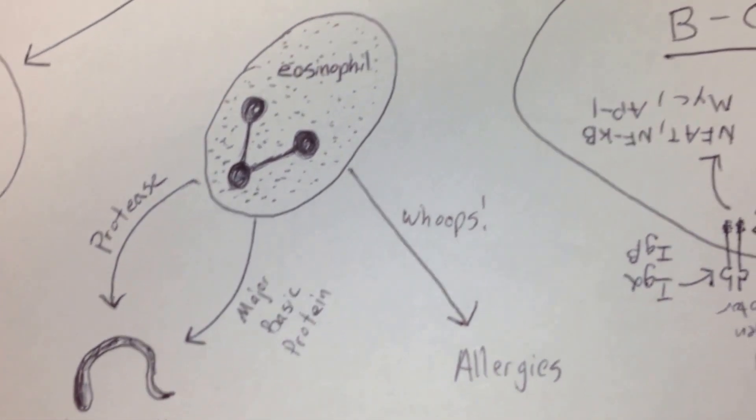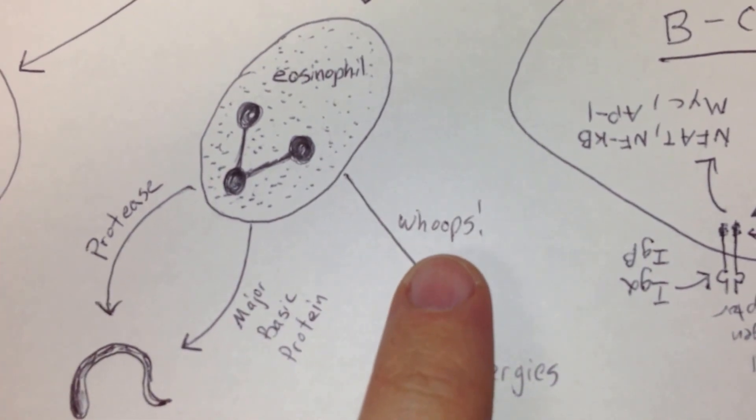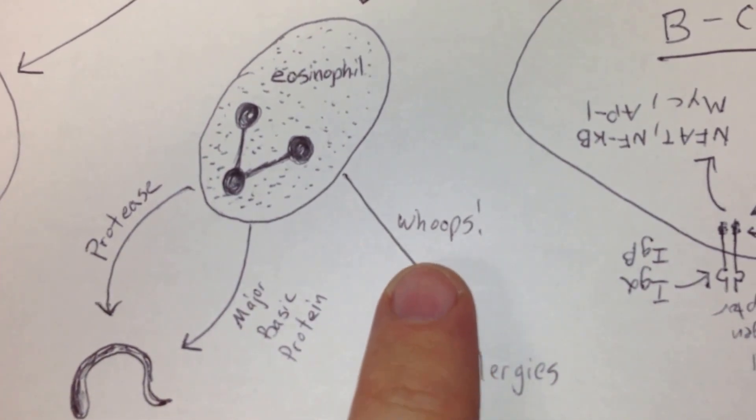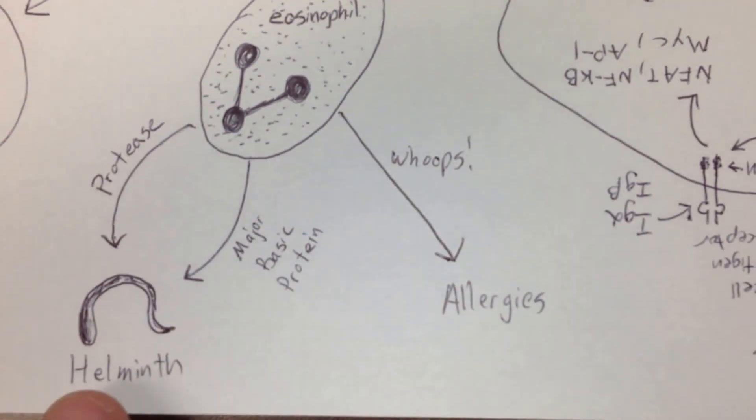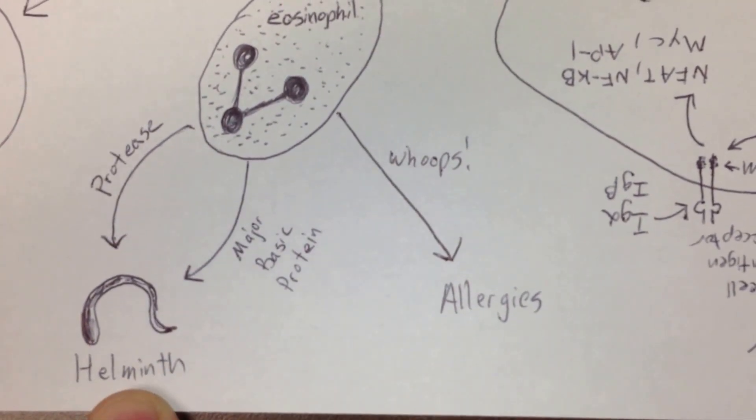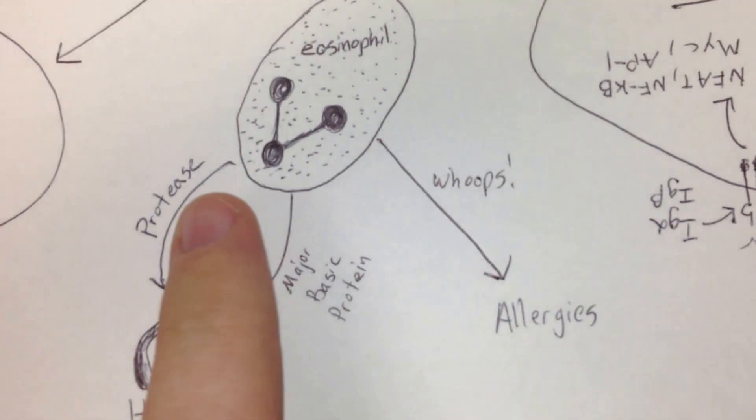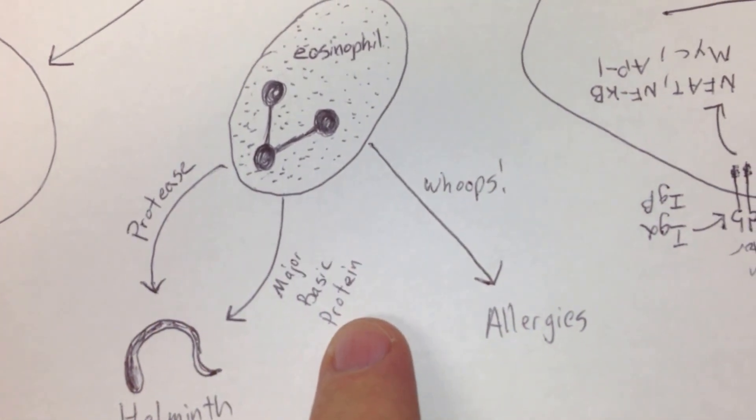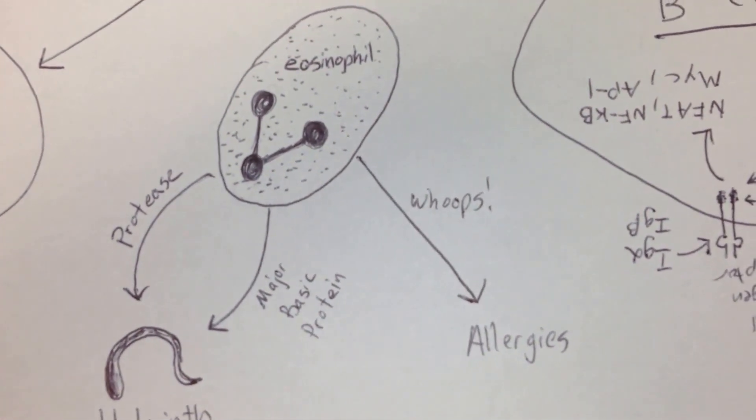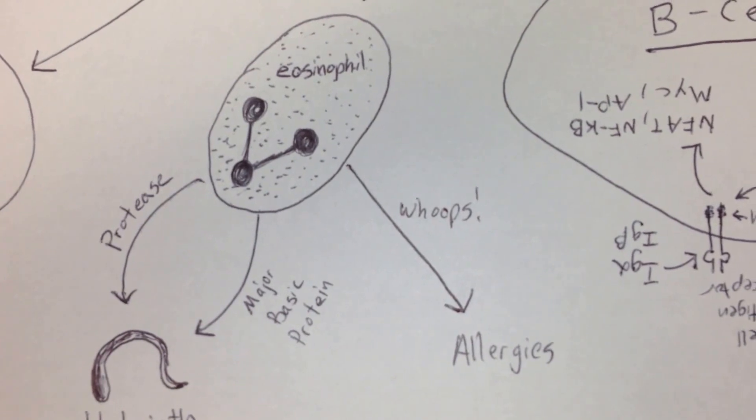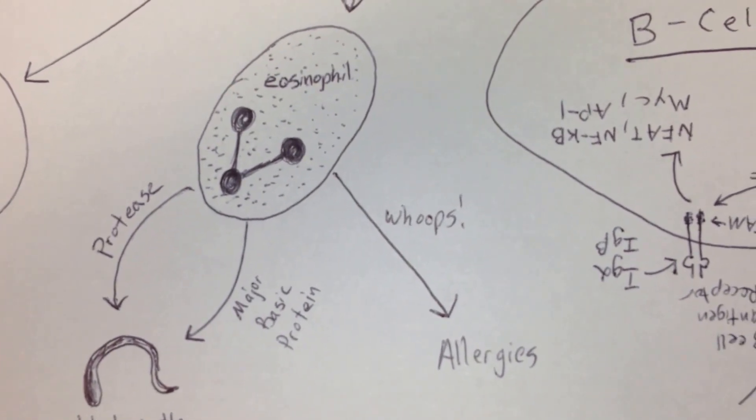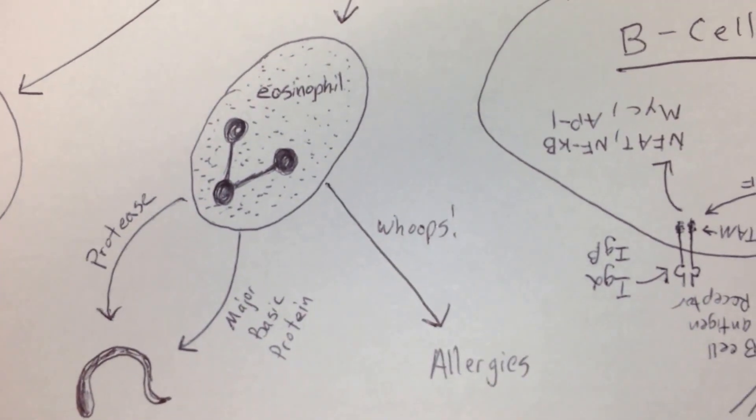What does the eosinophil do? Well, it has two jobs or two pathways. There's the whoops pathway that I created, and then there's the normal pathway. The normal pathway here is if you have a helminth invade your body, it will release proteases and major basic protein to try and kill the helminth. Or you don't really have any helminths and your eosinophils are bored and don't know what to do, and they just kind of whoops, and now you've got allergies.